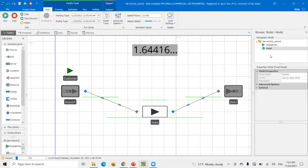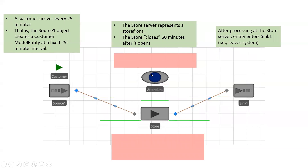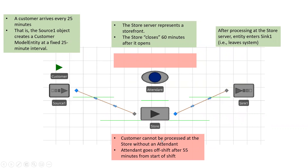Now let's look at a case where you add a secondary resource — an attendant. It's a similar situation: a customer arrives every 25 minutes, the store opens and closes 60 minutes after it opens. But the customer cannot be processed at the store without the attendant. The attendant goes off-shift 25 minutes from the start of their shift. How can we make sure the customer finishes processing at the store? It's the same situation, but now we have the secondary resource attendant.